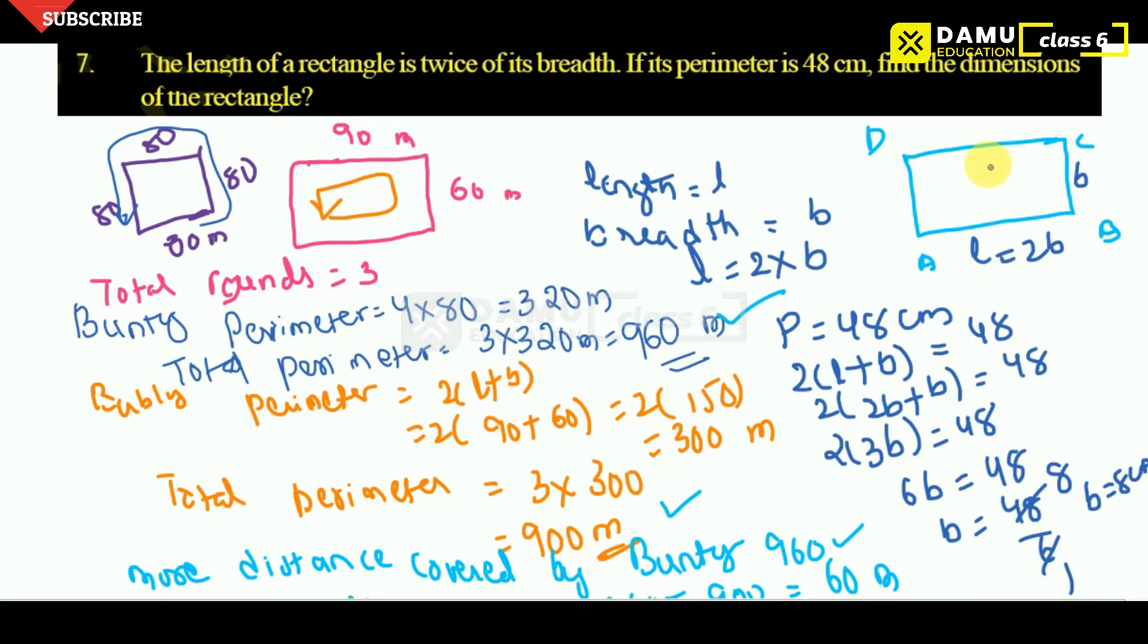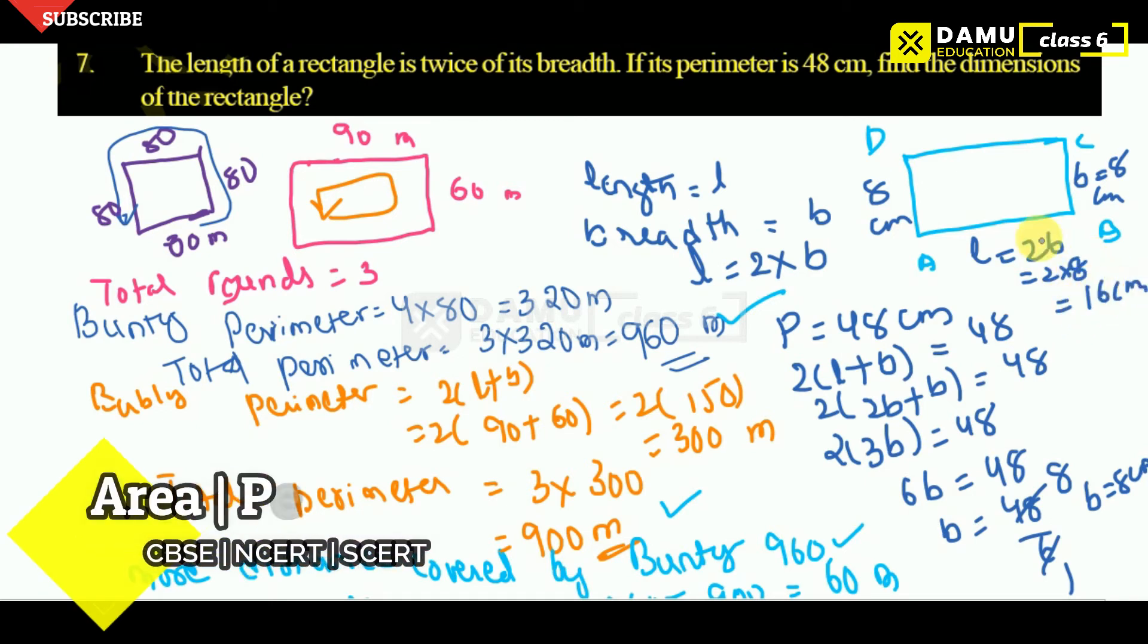Then B will be equal to 8. Then what you can get is 8 here. Here also 8 centimeter, 8 centimeter. Then here 2 into 8. What you will get here is 16 centimeter. Here also 16 centimeter. So like that, we get or otherwise you can check also.